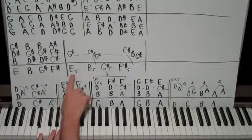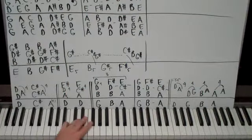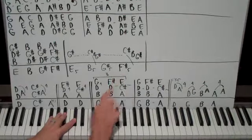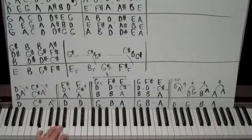Alright, so an E five. Then a B five would be B and F-sharp. And then a G-sharp five would be G-sharp, D-sharp. And then an F-sharp five would be F-sharp, C-sharp. So it's one, two, three, four, five.